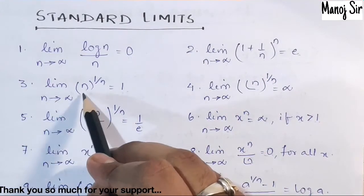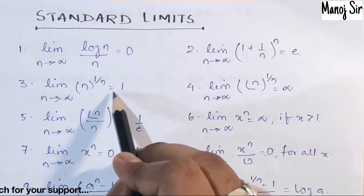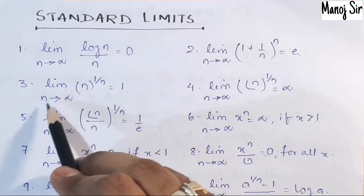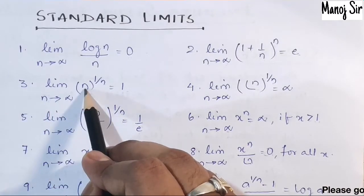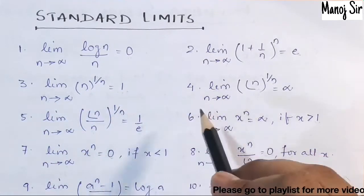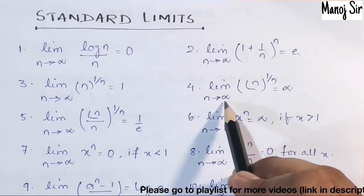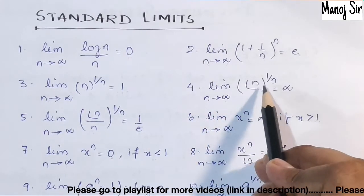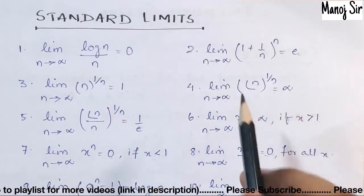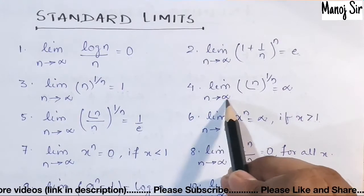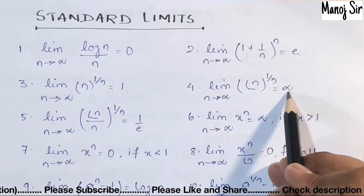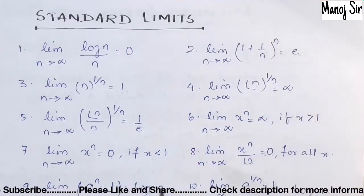Third standard limit: limit n tends to infinity of n^(1/n) equals 1. Fourth standard limit: limit n tends to infinity of (n!)^(1/n) is always infinity.